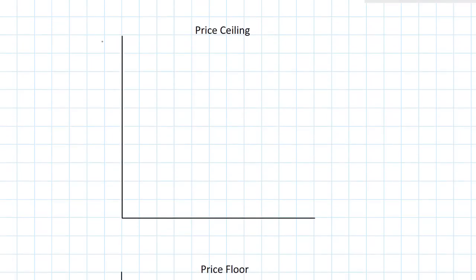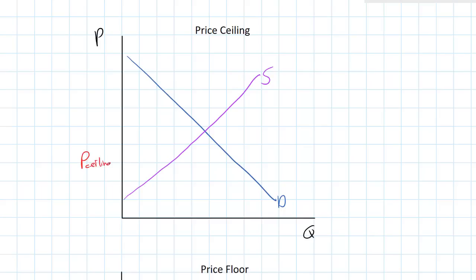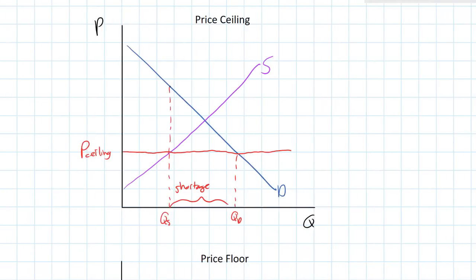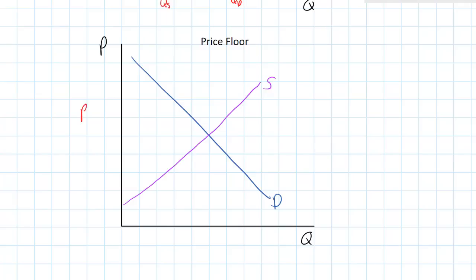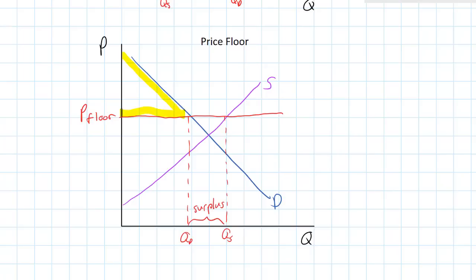Let's move on to government intervention in markets, starting with the price ceiling. This is a maximum price set below equilibrium meant to make consumers better off. Notice that it creates a shortage in the market as the quantity demanded is greater than the quantity supplied. Consumer surplus increases but producer surplus decreases, and overall there's a deadweight loss. Next, the price floor is a minimum price set above equilibrium meant to help producers. A price floor creates a surplus or excess supply where quantity supplied is greater than quantity demanded. Producers are helped with increased producer surplus, but consumers are worse off, and there's a deadweight loss.